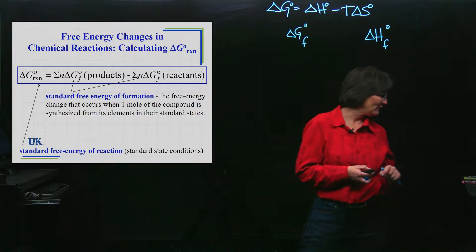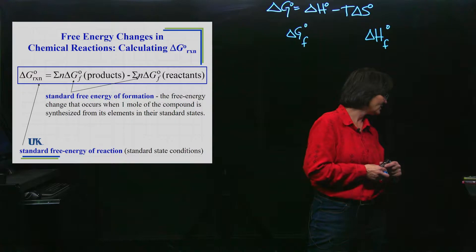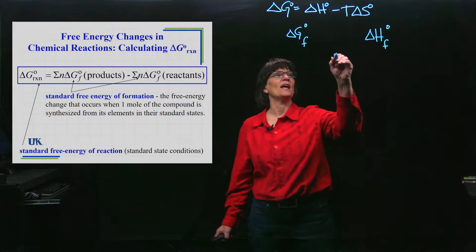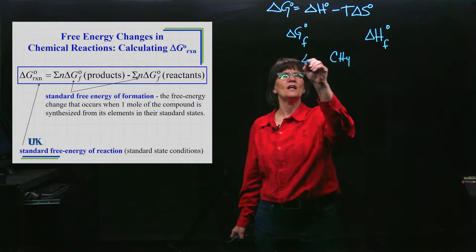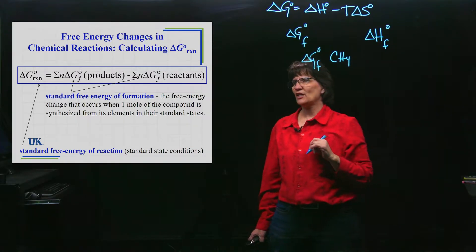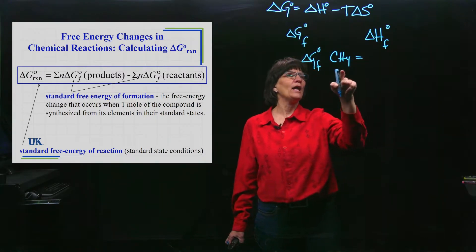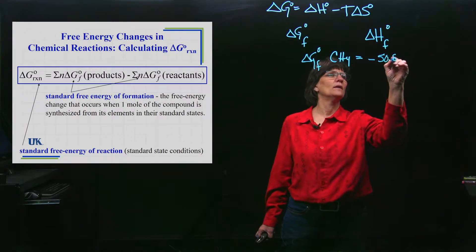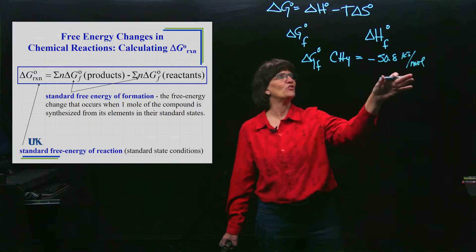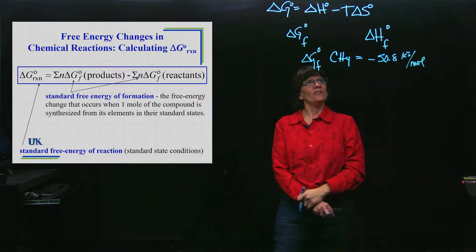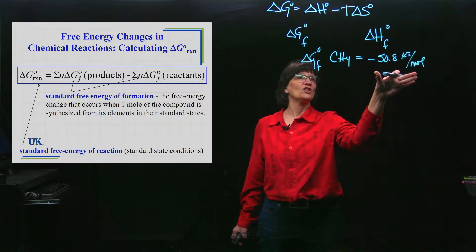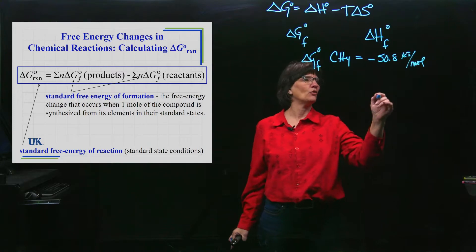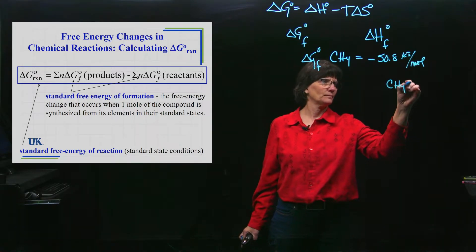Let's say I had Delta G of formation standard of CH4. If I went to a table and looked up that value, I would have a value of negative fifty point eight kilojoules per mole. This is a value of free energy available for a reaction when you make one mole of this compound. I'm going to put this on the right hand side, making one mole of that from the elements.